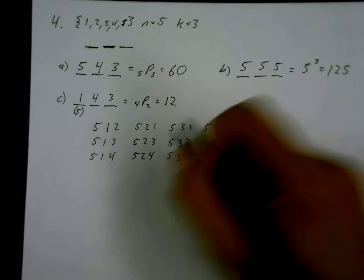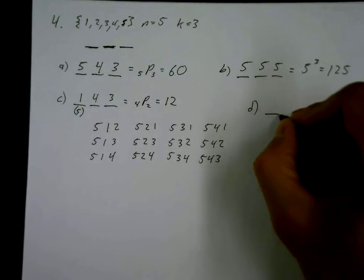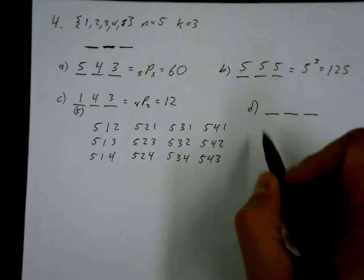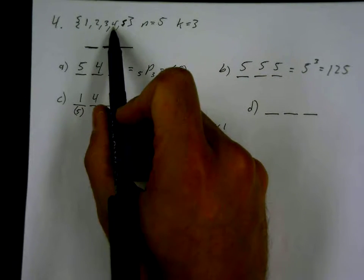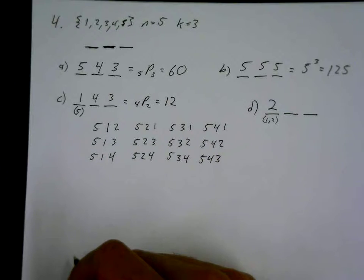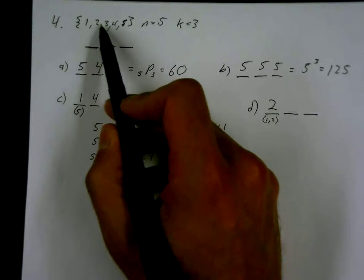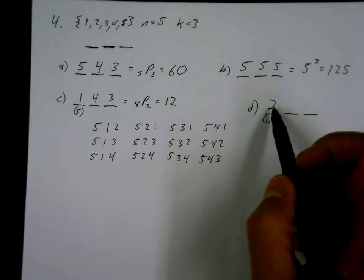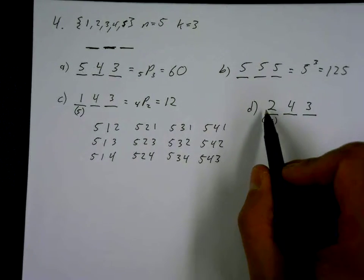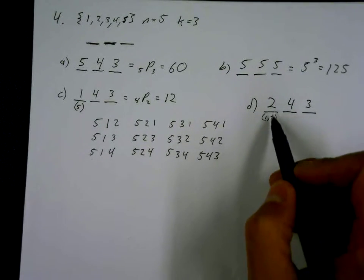Part d: repetition is allowed and the number must be less than 300. We're still dealing with a three-digit number. For the number to be less than 300, it can't start with 3, 4, or 5 — it has to start with a one or a two. So there are two numbers that could possibly go in that first seat. Remember, that two means either one of them could go there, not both. Then I have four left, then three — so it's 2 × 4 × 3.